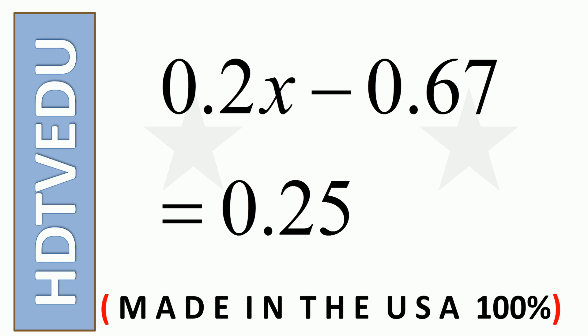Here is an equation containing decimals. 0.2x minus 0.67 equals 0.25. Solve for x.